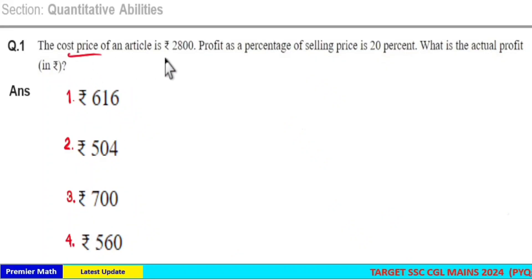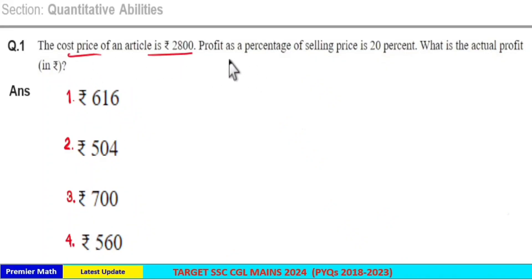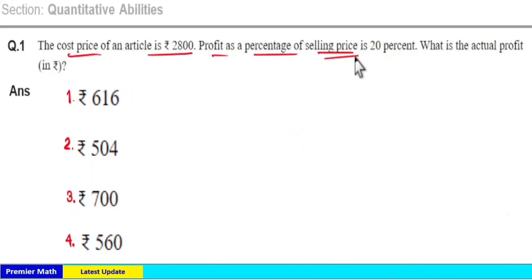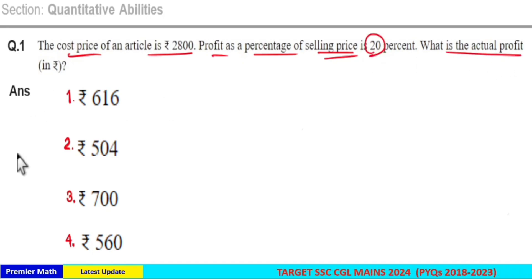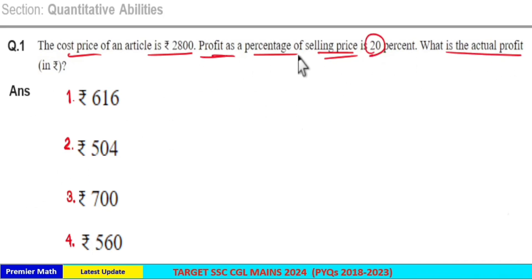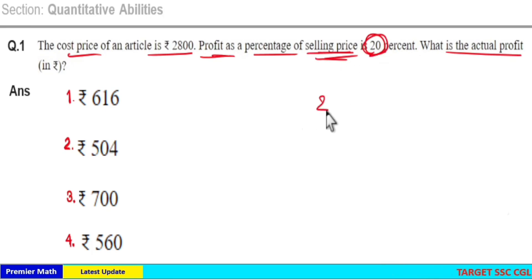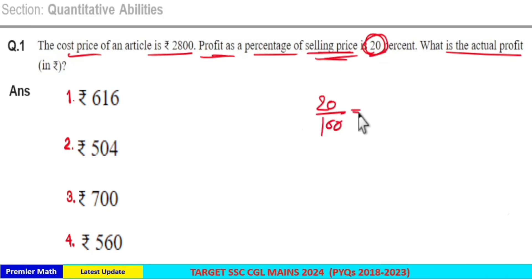The cost price of an article is 2800. Profit as a percentage of selling price is 20%. What is the actual profit in rupees? Here, profit is 20% of selling price. 20% means 20 by 100, that is 1 by 5th of the selling price.